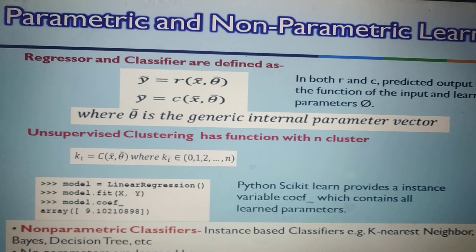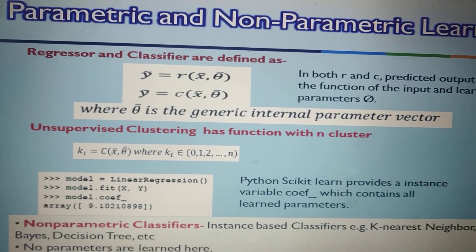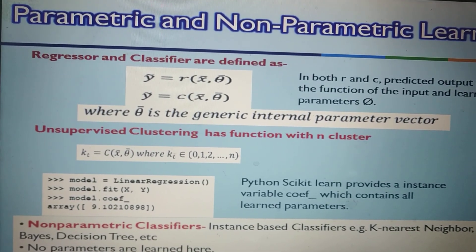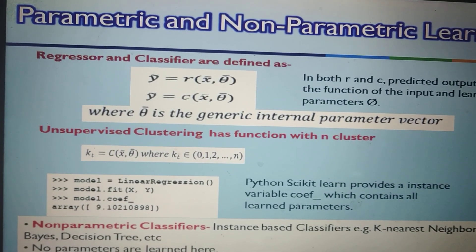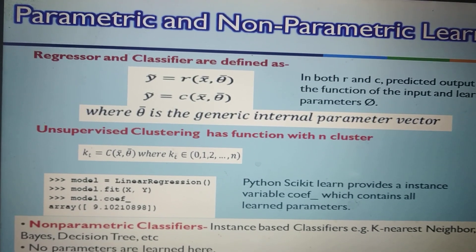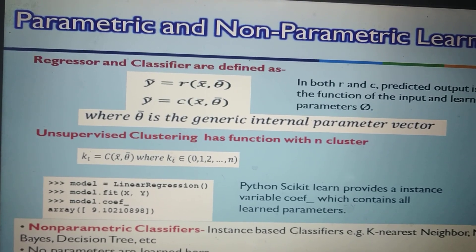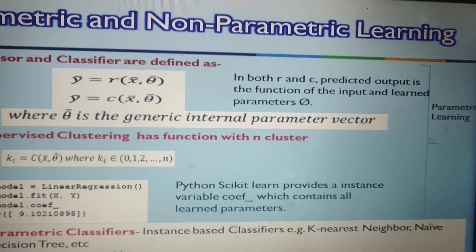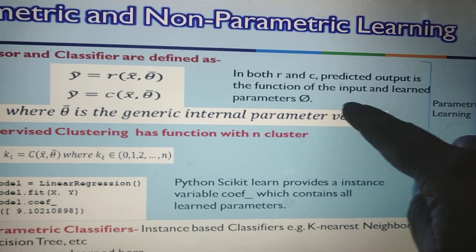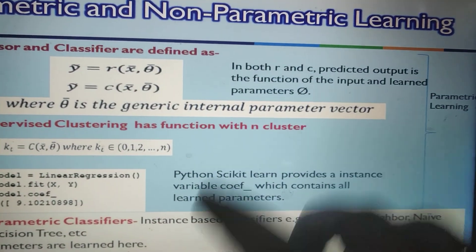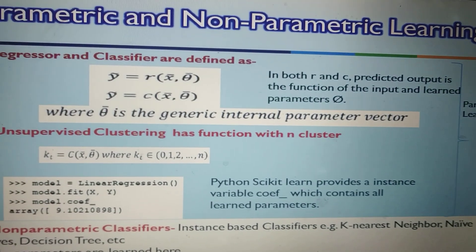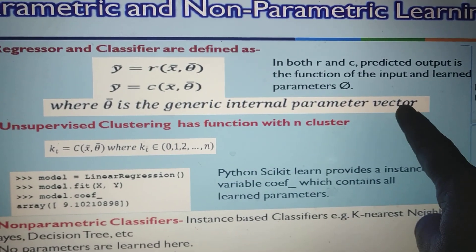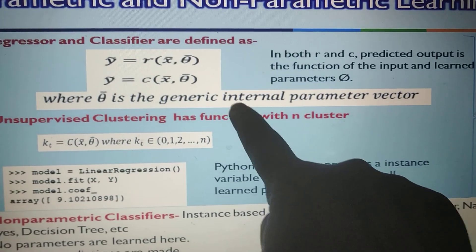Theta is a generic internal parameter. Through training, some knowledge is extracted — parameter values are set. In linear regression, m and c are learned so that for any x, y is calculated. Therefore, for both regression and classification, the predicted output is a function of the input and the learned parameter theta. That's why it is called a parametric classifier, where theta is the generic internal parameter vector obtained through the training process.